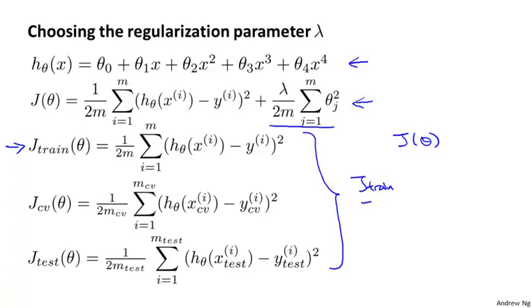My definitions of J_train, J_cv, and J_test are just the average squared error, or one half of the average squared error, on my training, validation, and test sets, without the extra regularization term.